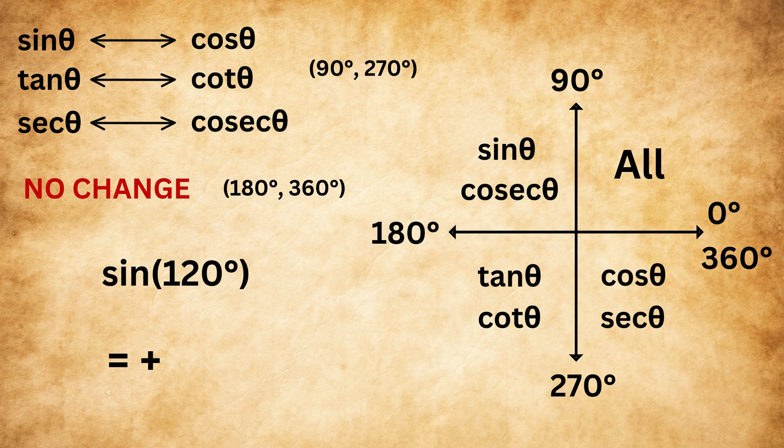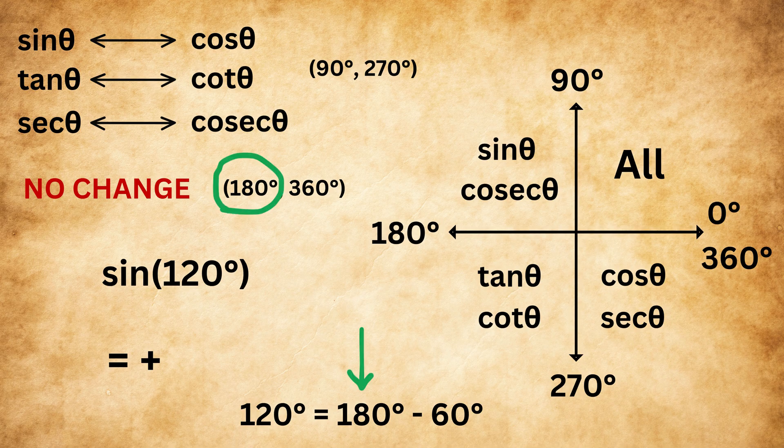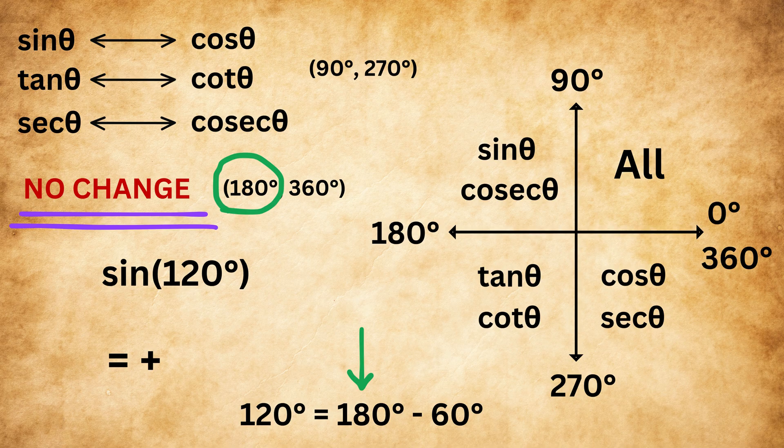We could have solved it the other way as well by writing 120 as 180 minus 60. Since here we have 180 degrees, the ratio remains the same, and it will be sine of 60 degrees, which is also root 3 upon 2.